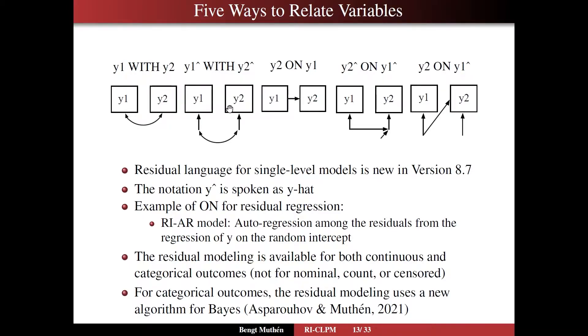But now what's new is that you can use this with for residual variables. So the residuals here for y1 and for y2 are going to be referred to as y1 hat and y2 hat. And we can have a covariance between them without having to introduce a latent variable. Now this all assumes that these y variables are influenced by something else such as a random intercept so that you have true residuals. It should be a residual of a regression of some sort even if it's a regression of a factor indicator on a factor.